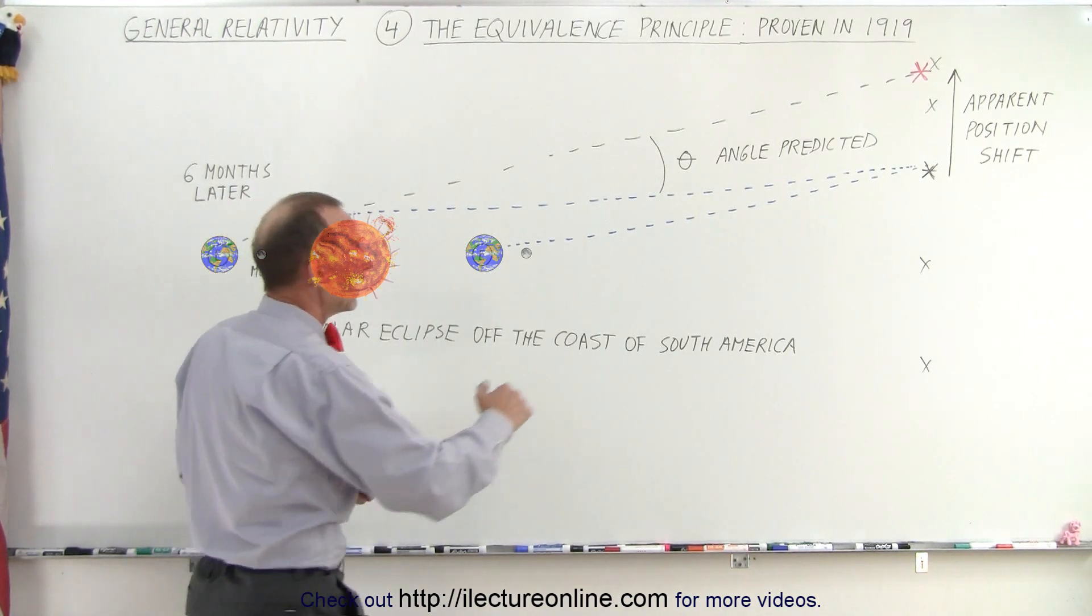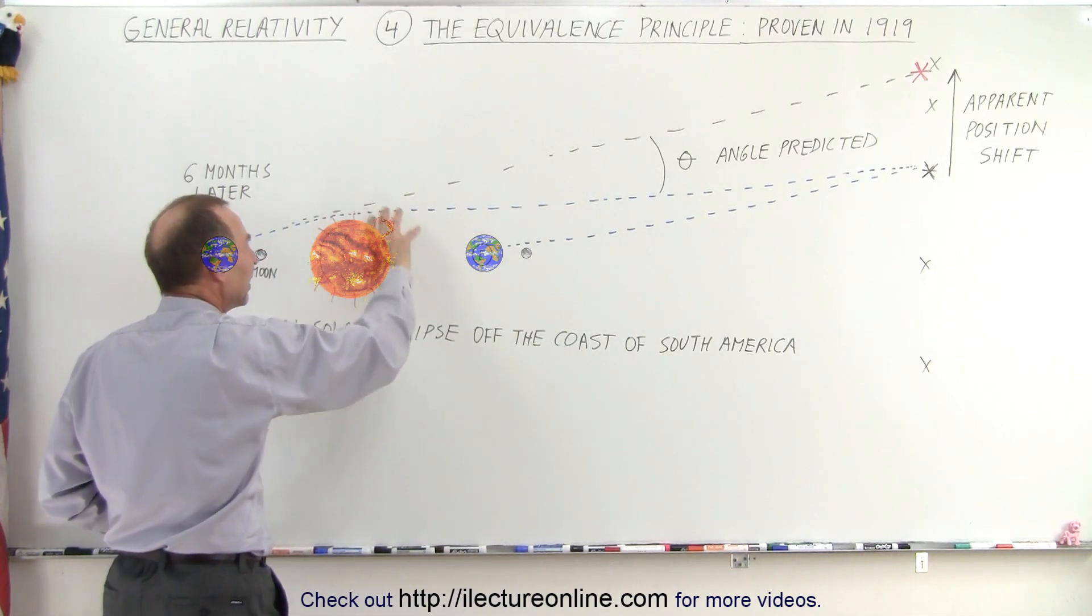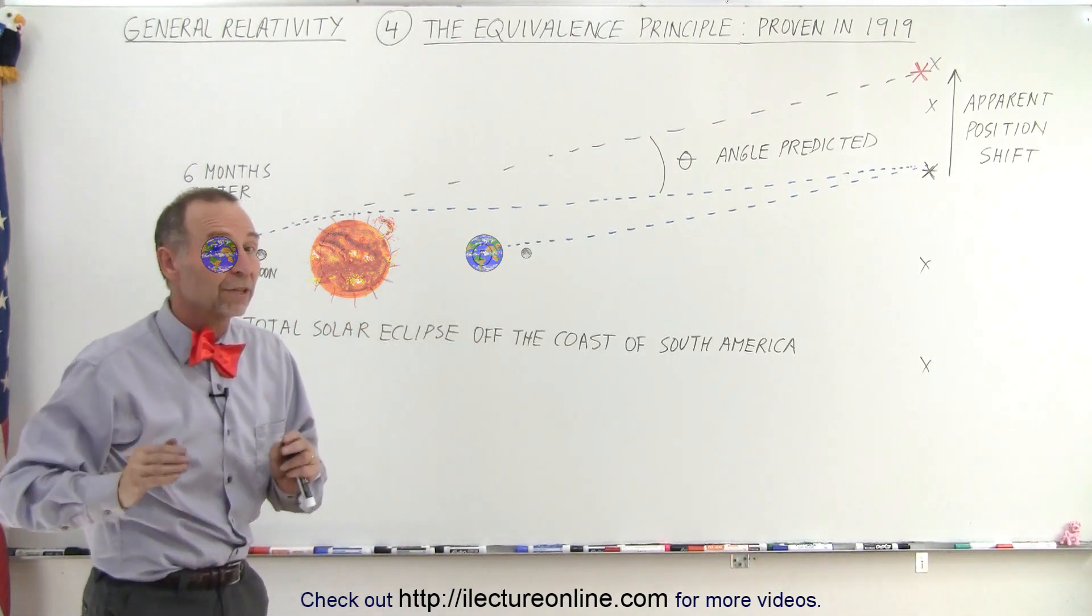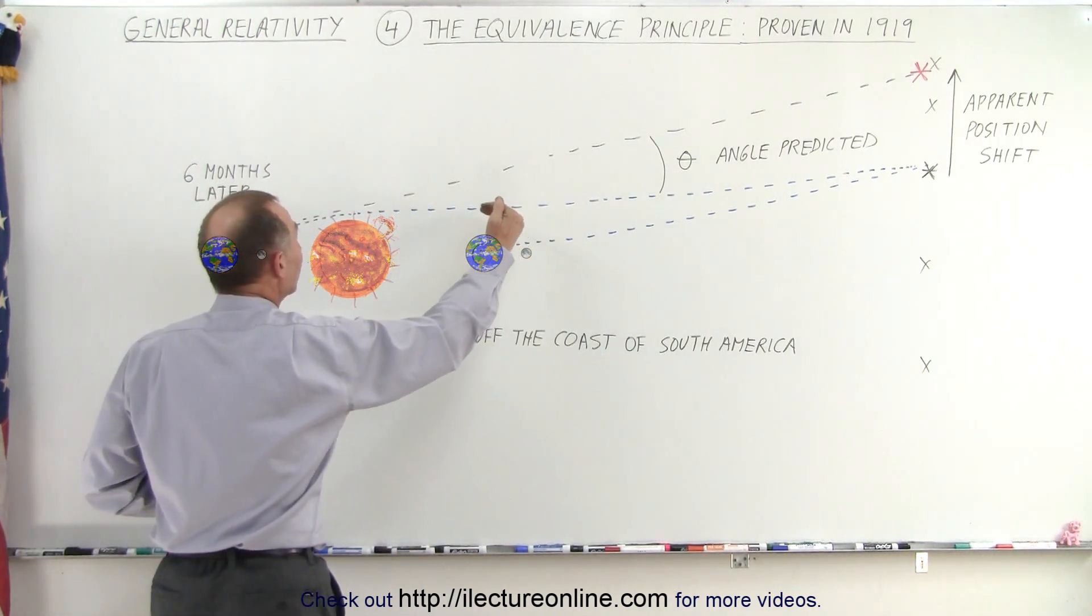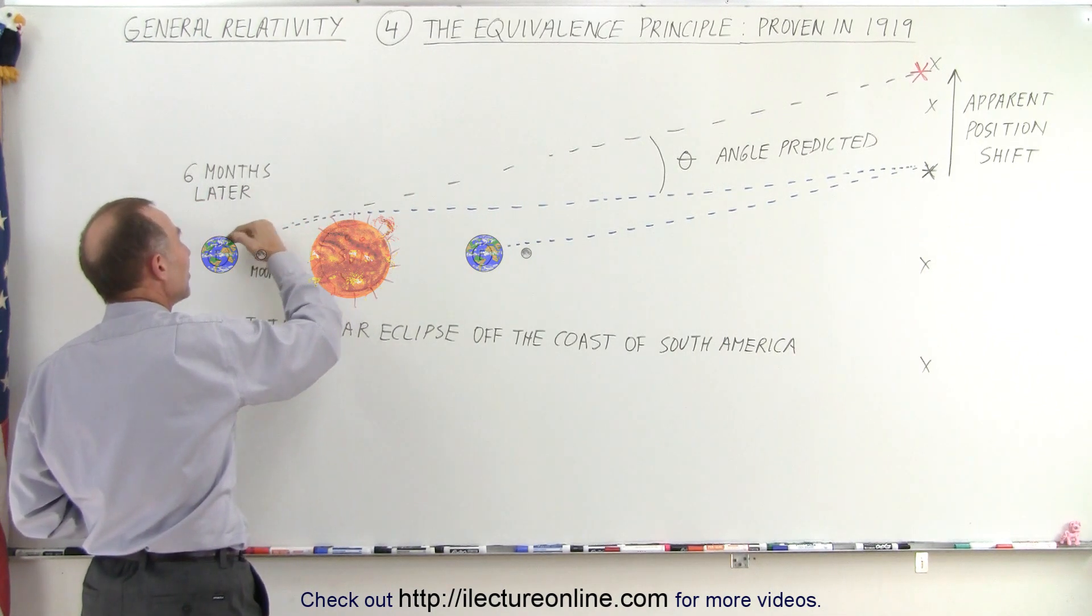But if the light had to travel past the sun to reach the earth, Einstein predicted that the gravitational field around the sun, the warping of space, would cause the light to change direction. And as the light then approached the earth at a different angle...